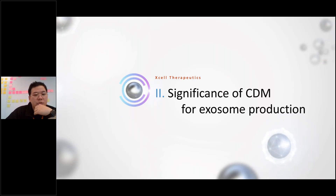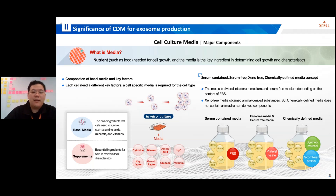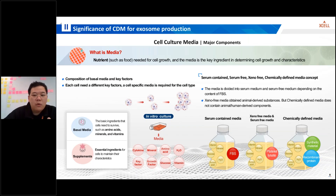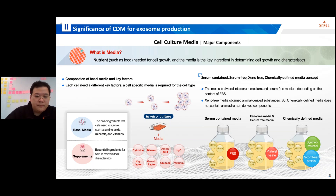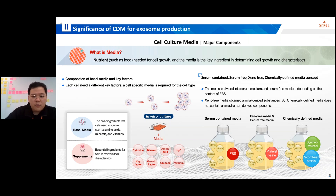I will share the significance of the chemically defined media — we call CDM — for exosome productions today. Now let's talk about the main components of cell culture media. The medium, which can be likened to the nutrient or food for cells, plays an important role in determining the growth and characteristics of cells. It consists of a base medium and key elements needed to maintain cell-specific characteristics. Different cell types have different requirements for growth and function, so cell-specific media formulations are needed.